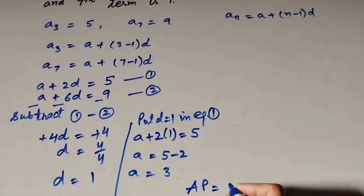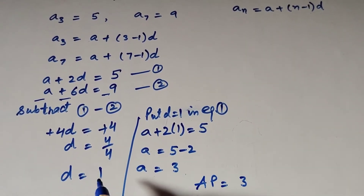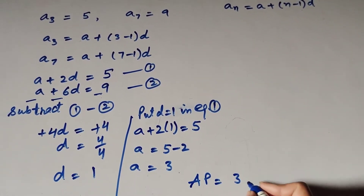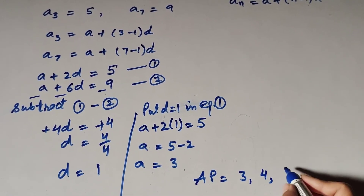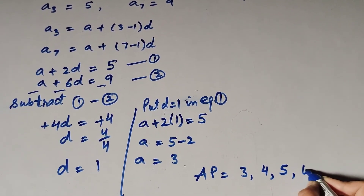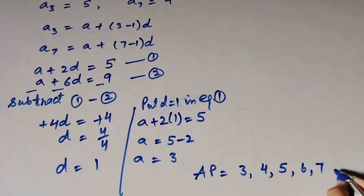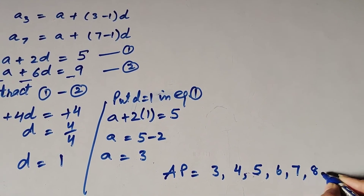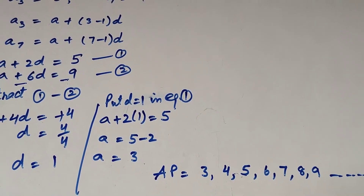The AP series starts with first term 3 and common difference 1: 3, 3 plus 1 is 4, 4 plus 1 is 5, 5 plus 1 is 6, 6 plus 1 is 7, 7 plus 1 is 8, 8 plus 1 is 9, and so on.